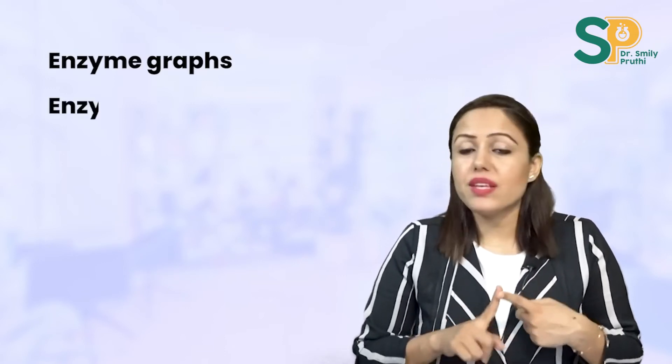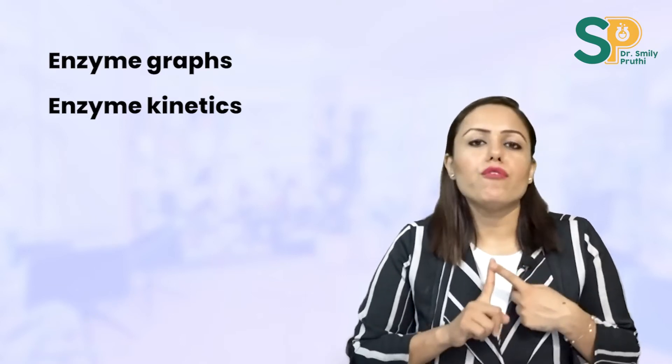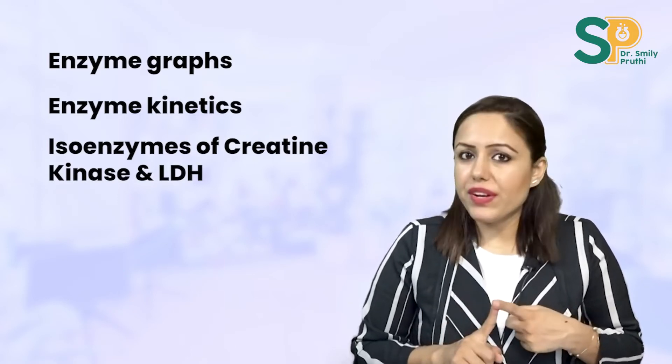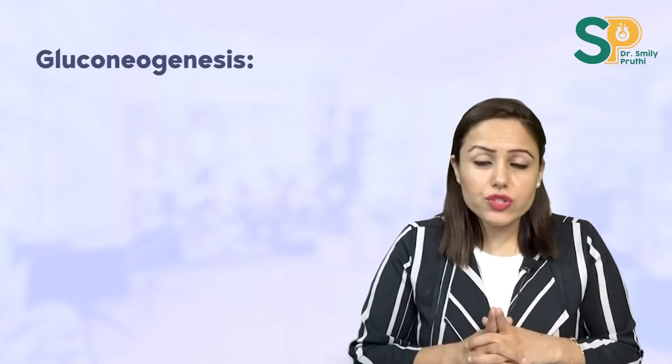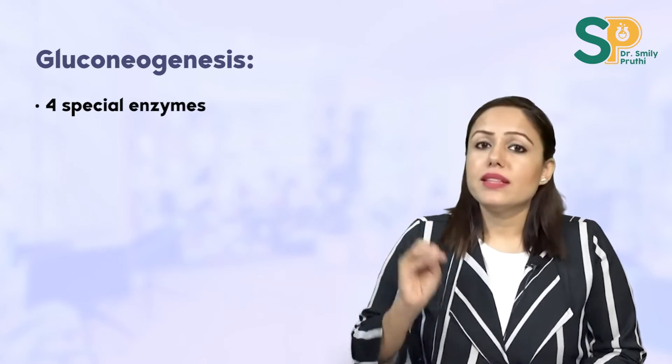Do enzyme graphs — I have a video on YouTube named 'Enzyme Kinetics' with numericals that are very useful. Also do enzyme classification, then isoenzymes of creatine kinase and LDH. In the electron transport chain, learn the inhibitors of the four complexes and the uncouplers. In gluconeogenesis, learn the four special enzymes — pyruvate carboxylase, PEPCK, etc.